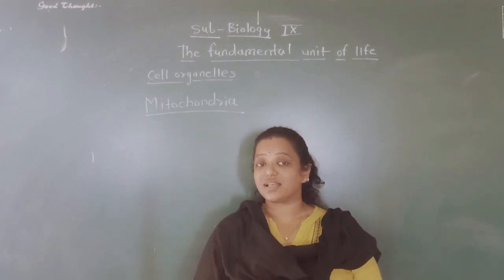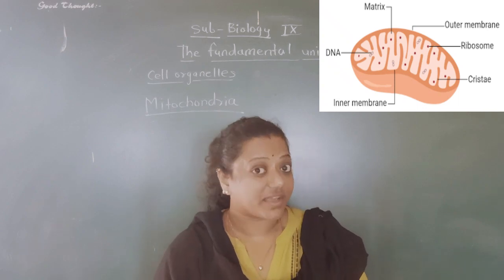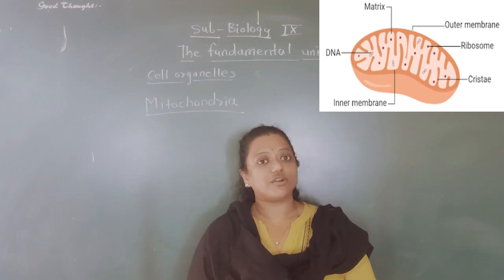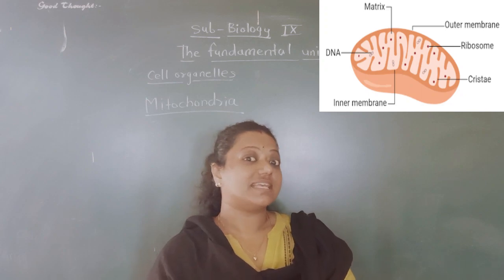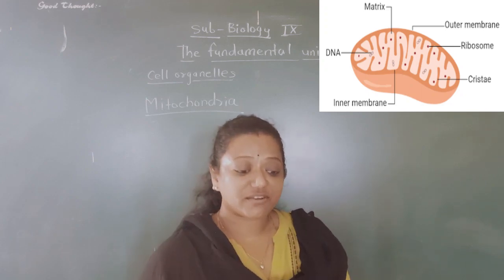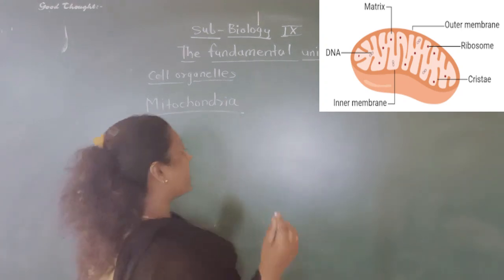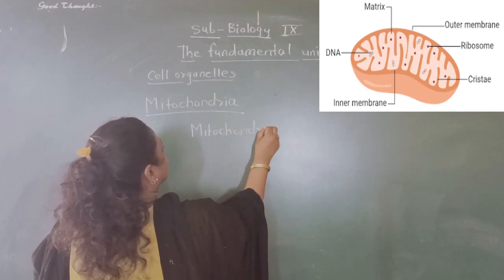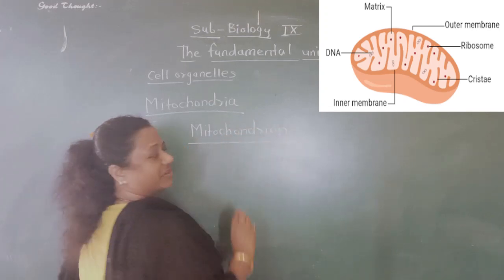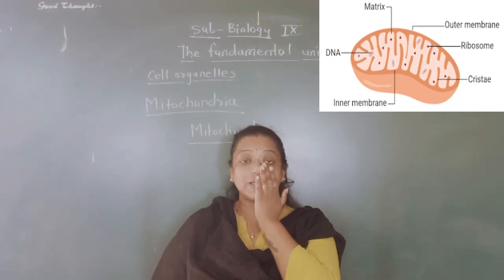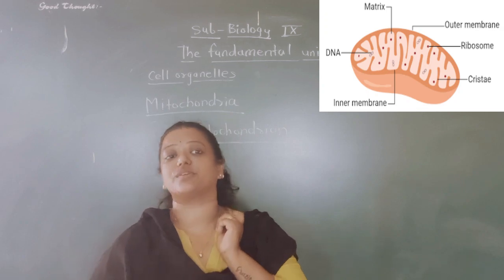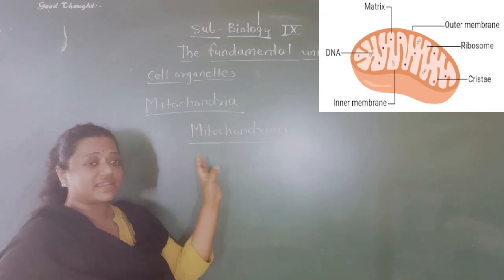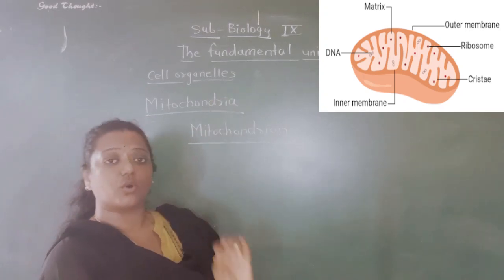What is mitochondria? If I ask you this question, it is not entirely correct. Why? Because mitochondria is the plural form. The singular form of mitochondria is mitochondrion. So in singular it is called mitochondrion, and in plural it is called mitochondria.